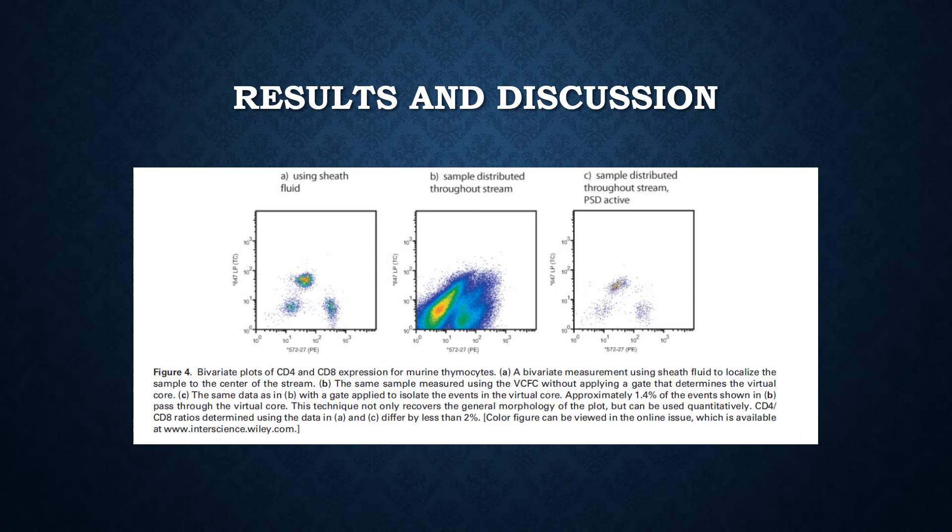Trials were made and they used many different samples. One of the samples was a CD4 and CD8 expression. The graphs show the results using the traditional flow cytometer, which is in graph A or on the left. Then, it shows the results of the CD4 and CD8 expression using a VCFC without the gates.